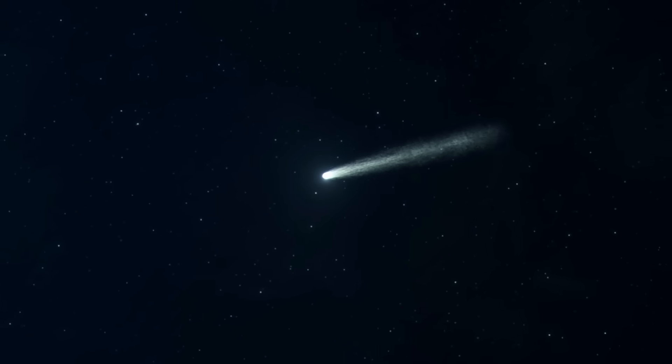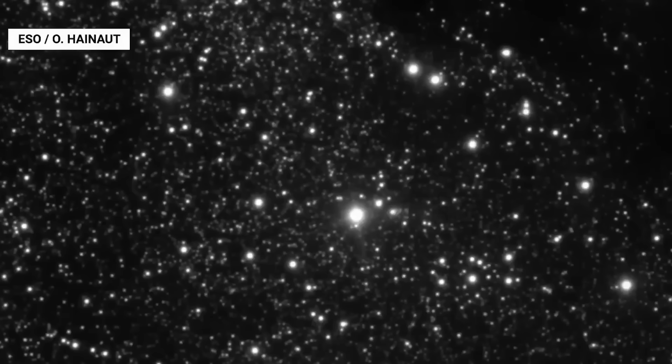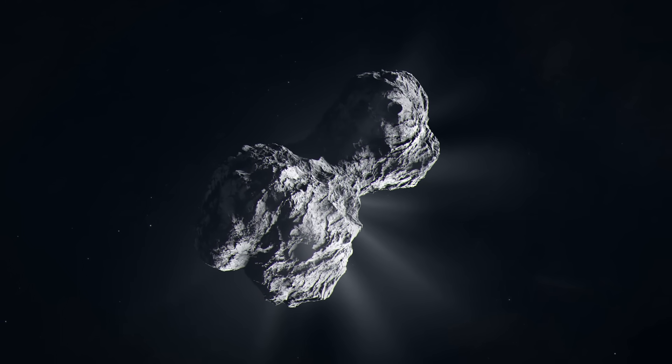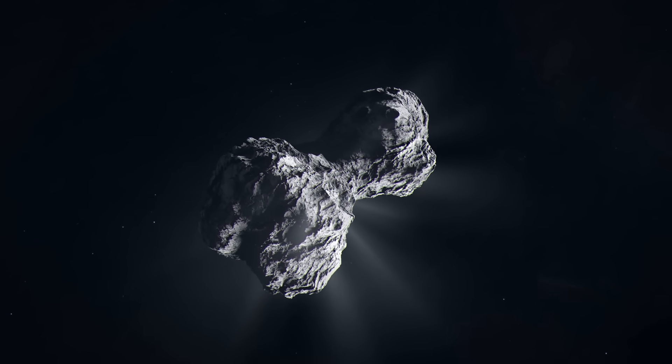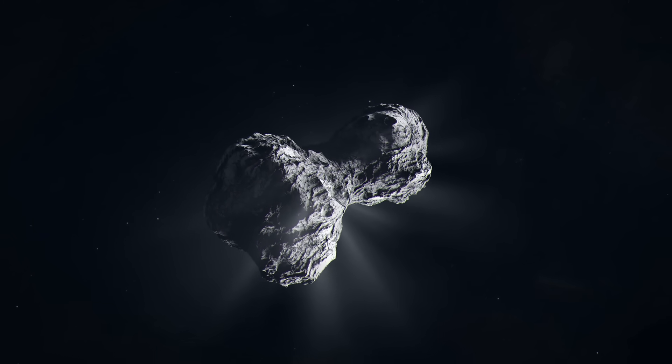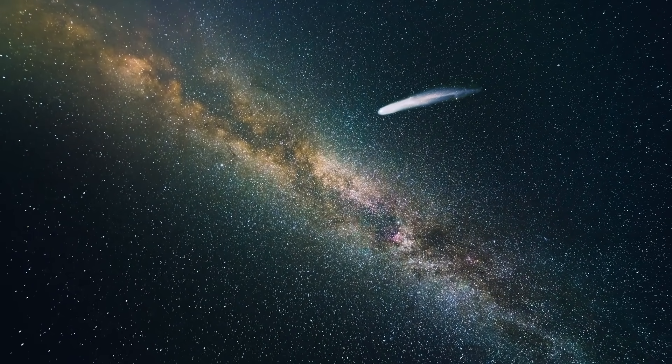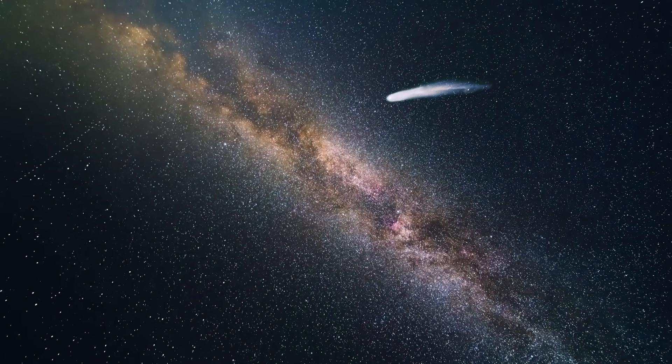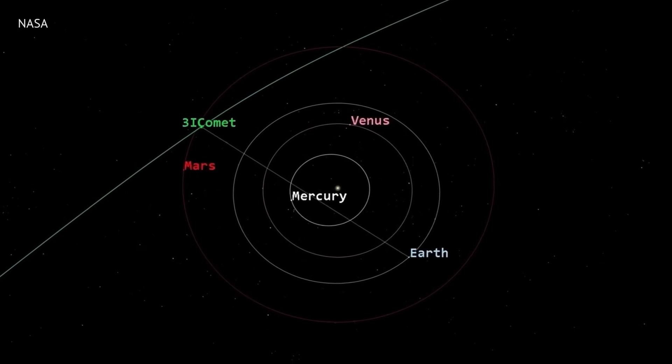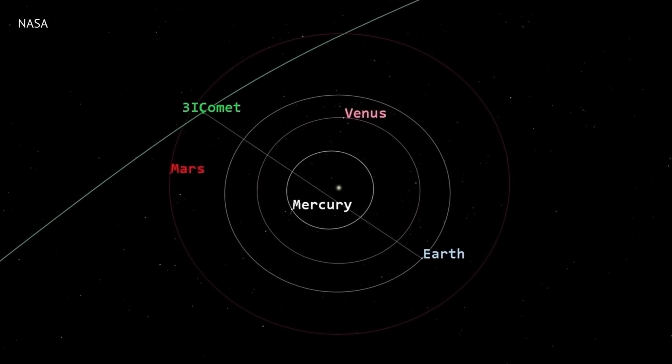Now 3i Atlas is likely a patchwork. Sealed fractures. Frozen over vents. Volatile pockets at different depths. Randomness everywhere. And for months, it looked like one dominant vent, or group of vents, was doing most of the work. One major fracture. Steady venting. A consistent dominant jet. Which is why the non-gravitational push seemed consistent too. But this object has been heating and cooling for months. And the deep interior is still catching up. So what changed?